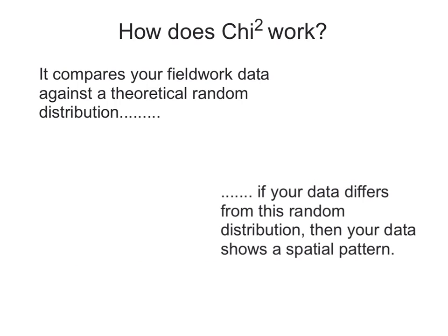So let's just look briefly at how chi-squared works. It compares your fieldwork data that you've collected out in the field against what we call a theoretical random distribution. Now if your data that you've collected in the field differs from this random distribution, then you can categorically say that your data shows a spatial pattern.